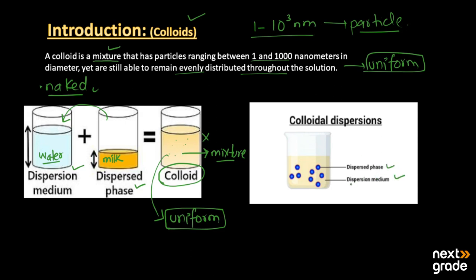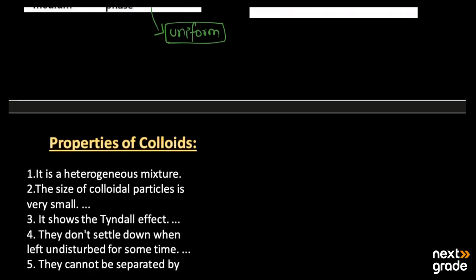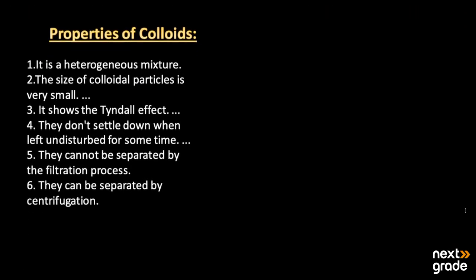The dispersion medium is the main medium that gives space for the particles to settle down. On the other hand, the dispersed phase — we can take milk as an example. These are the two phases of the colloid.